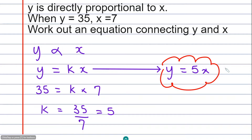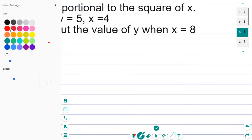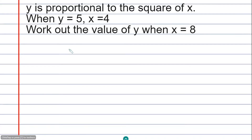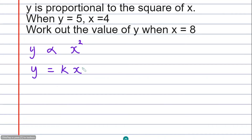Now we move on to the next question. In this question we're not directly asked to find an equation, but we still need it to solve the problem. Begin with the first line: y is proportional to the square of x, so we write y ∝ x². Next, replace the proportionality sign with an equals sign and include the constant k, giving y = kx².